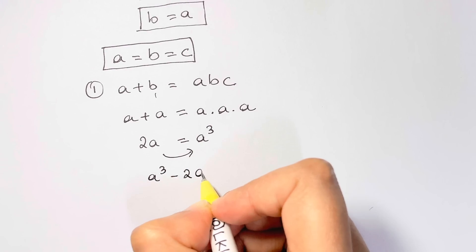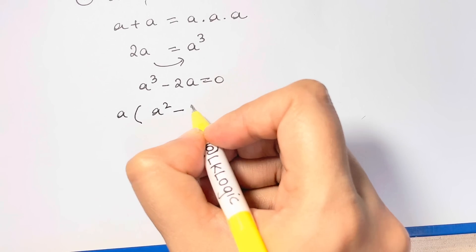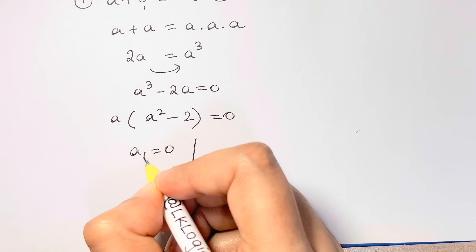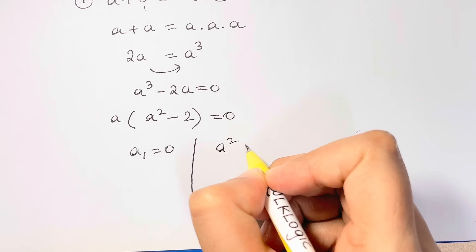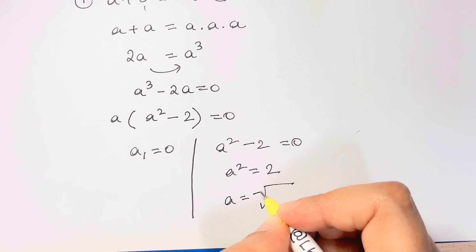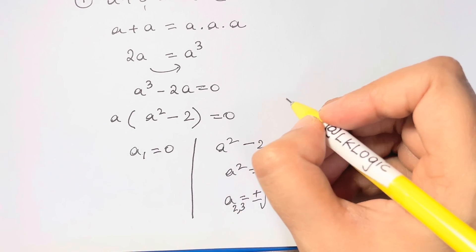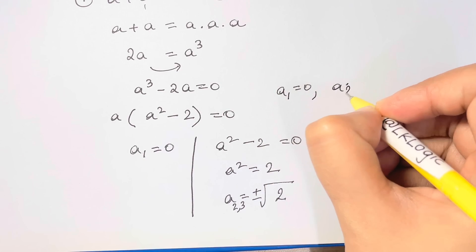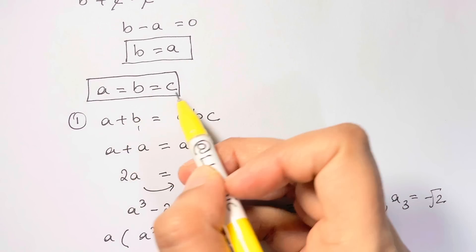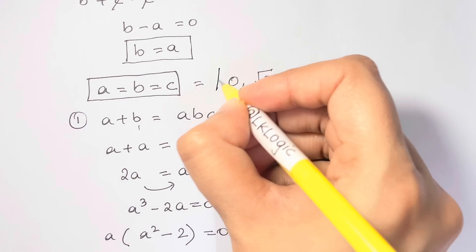Rearranging: a cubed minus 2a equals zero. Taking out a common factor: a times (a squared minus 2) equals zero. This gives two conditions. First, a₁ equals zero. Second, a squared minus 2 equals zero, so a squared equals 2, giving a equals plus or minus square root of 2. So we have three values: a₁ equals 0, a₂ equals positive root 2, and a₃ equals negative root 2. Since a equals b equals c, each of these applies to all three variables.